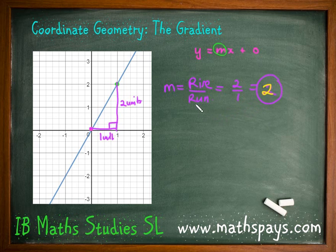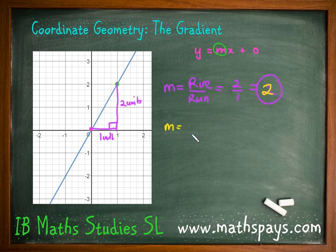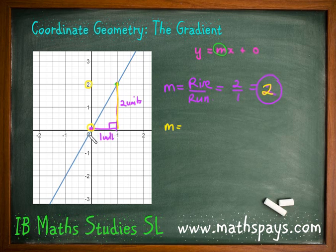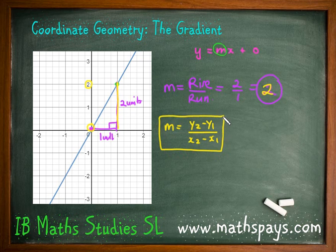For more challenging questions, it might not be drawn out for you, and while you're welcome to draw it each time, it can be time-consuming. Also, rise over run doesn't tell you if it's a positive or negative gradient — you need to figure that out yourself. So let's come up with a formula. Recalling the distance lesson and Pythagoras' theorem, the height of the triangle is simply the difference between the two y-coordinates, and we can do the same with the x-coordinates. That gives us m equals y2 minus y1 over x2 minus x1 — that is your gradient formula.